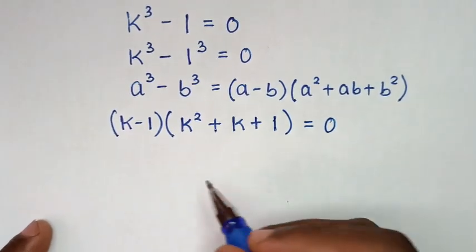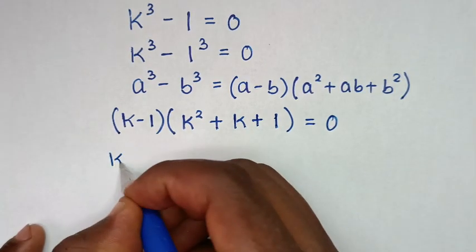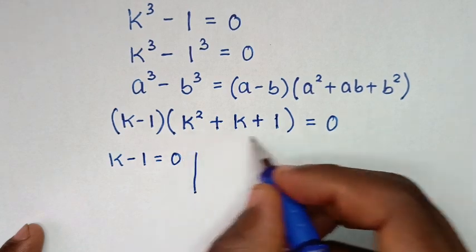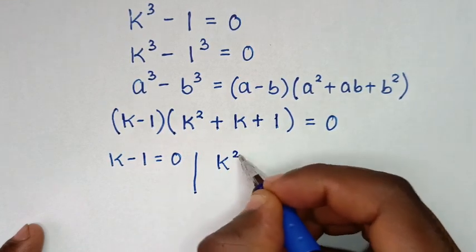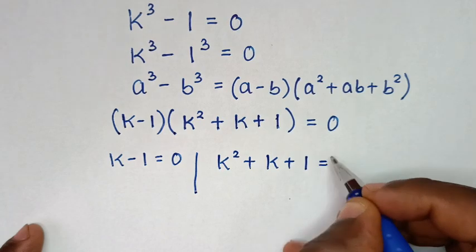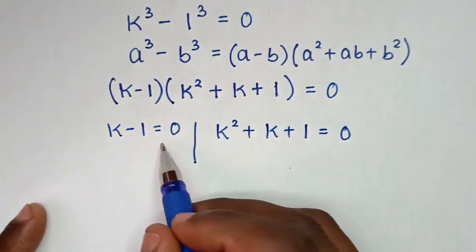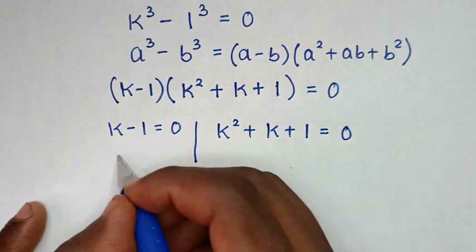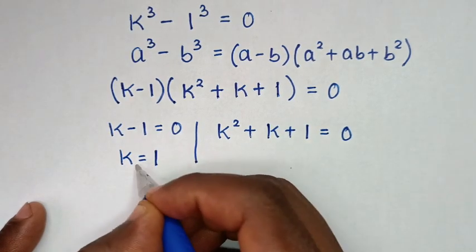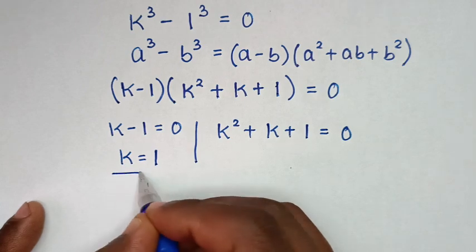In the next step, from here we'll have two solutions: the first solution of k minus 1 is equal to 0, and the second solution of k square plus k plus 1 is equal to 0. From the first solution, we'll take negative 1 to this side, so k is equal to 1. This is the first value of k, which is the real solution.